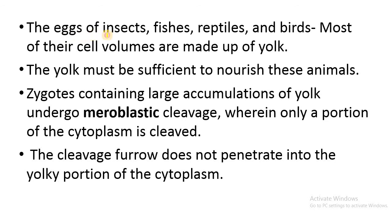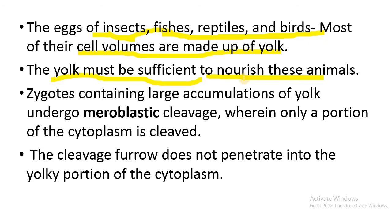Coming to the eggs of insects, fishes, reptiles, and birds — most of their cell volume is made up of yolk. Here the yolk must be sufficient to nourish these animals. Zygotes containing large accumulations of yolk undergo meroblastic cleavage, wherein only a portion of the cytoplasm is cleaved.